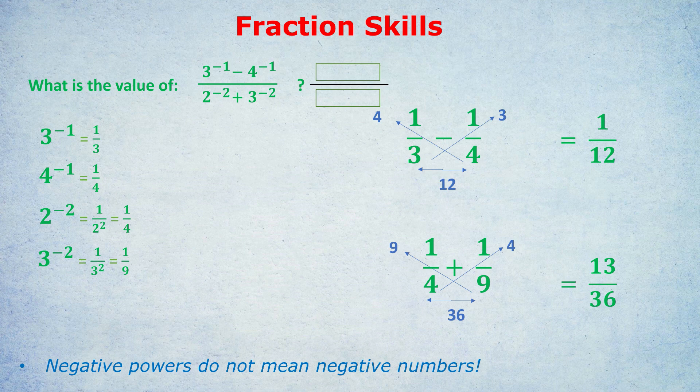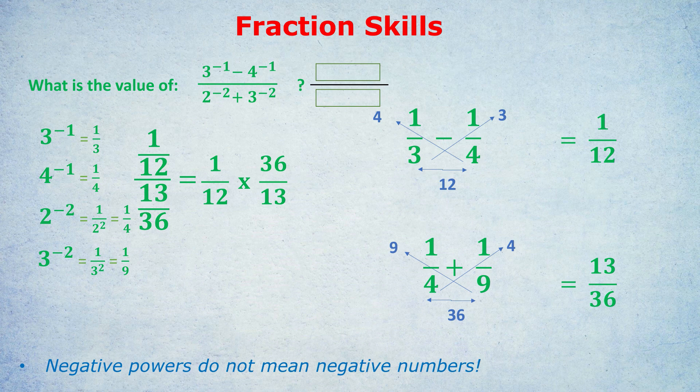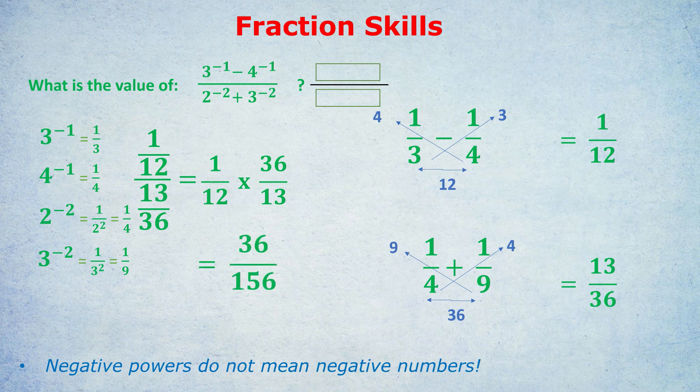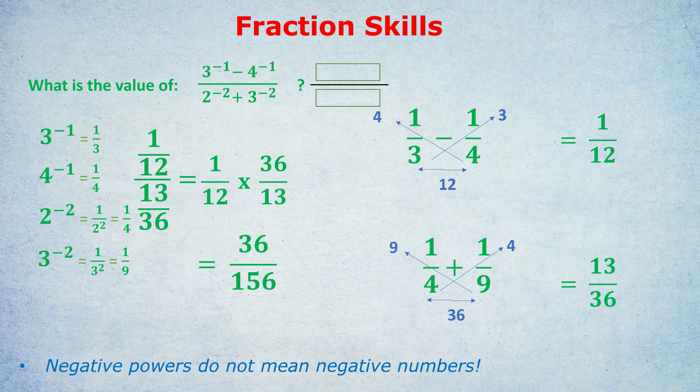And now we're going to divide 1/12 by 13/36. How do we divide? We change it into a multiply. So we flip the second fraction and change it into a multiply. Now this would be a fraction I would probably simplify. I'd cancel out the 36 with the 12 and just get a 3. Or we can just do it as we did before. 1 times 36 is 36. 12 times 13 is 156. Giving us our final answer, which again we don't need to simplify, of 36 over 156.